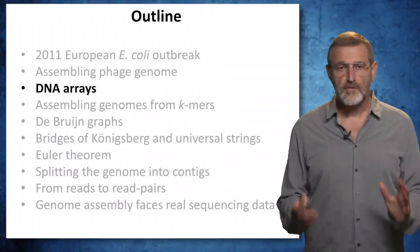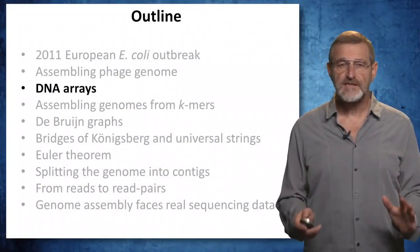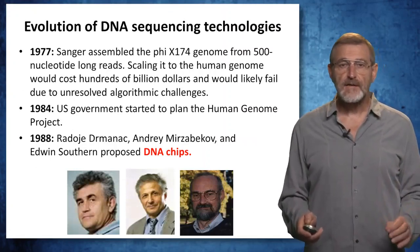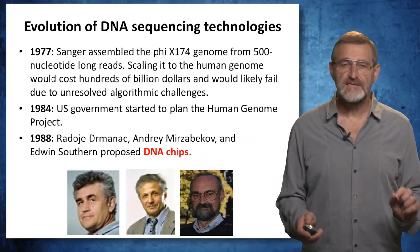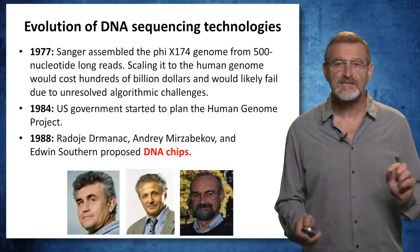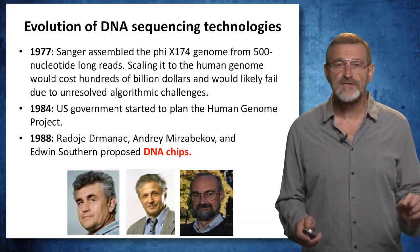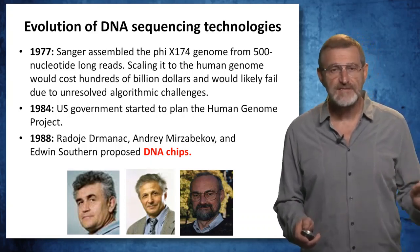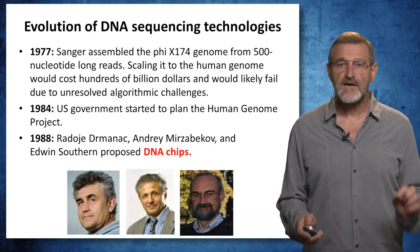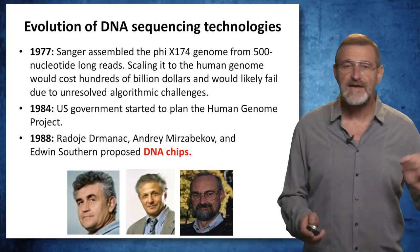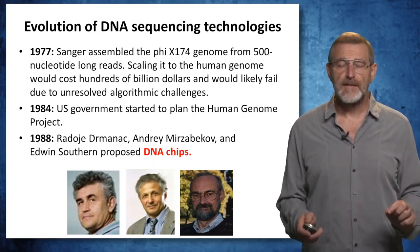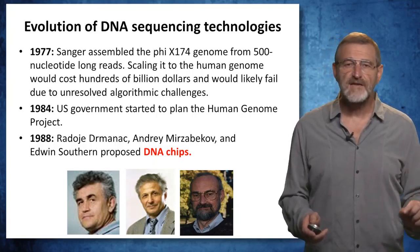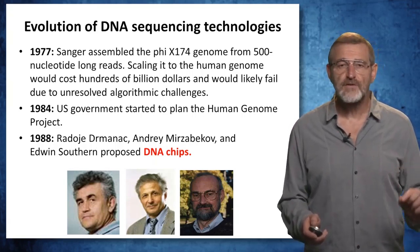We will now talk about one of the alternative technologies for DNA sequencing: DNA chips or DNA arrays. When Sanger assembled the phage genome from 500 nucleotide long reads in 1977, scaling this to the human genome would be extremely expensive and would likely fail due to unresolved algorithmic challenges. Nevertheless, the US government in 1984 started to plan the human genome project that, another 16 years later in 2000, resulted in the draft sequence of the human genome. But at the same time, three scientists in three different countries thought about an alternative technology for DNA sequencing, and they invented so-called DNA chips.